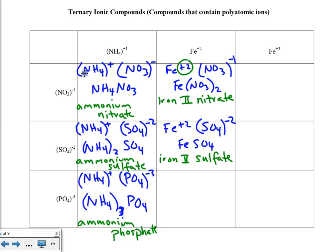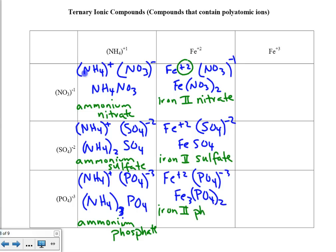The third example pairs Fe⁺² with PO₄⁻³. Crisscrossing, the formula becomes Fe₃(PO₄)₂. The name of this substance is iron 2 phosphate.